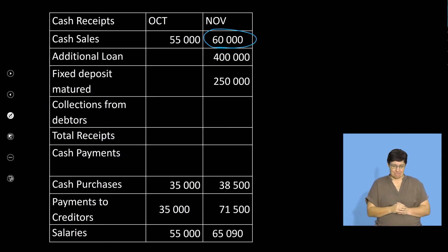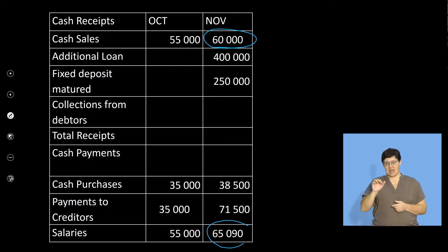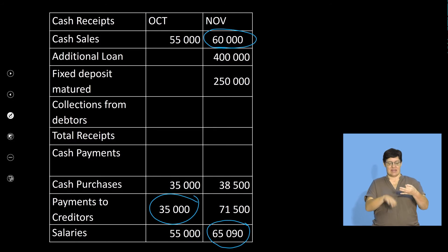So we have completed the missing figures: A was the salaries calculation, B was the payments to creditors, and C was the cash sales figure. We have completed all the missing figures needed in the cash budget.